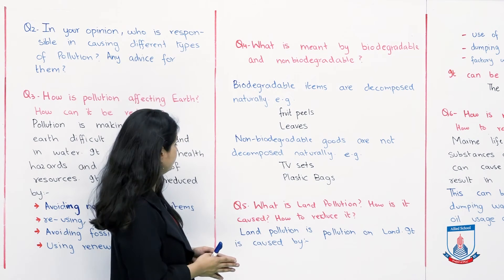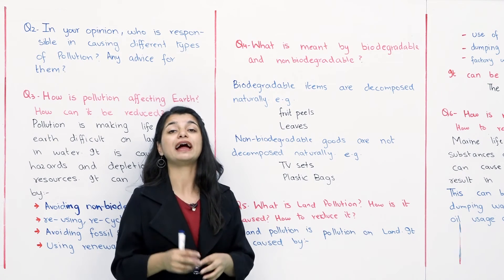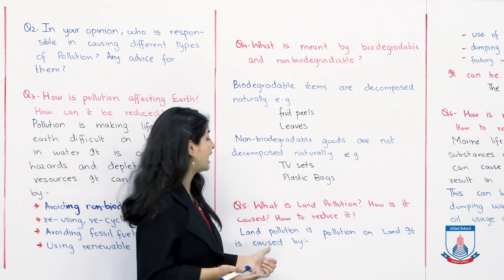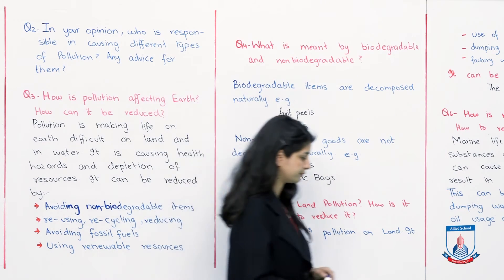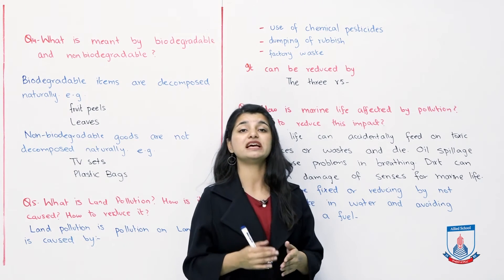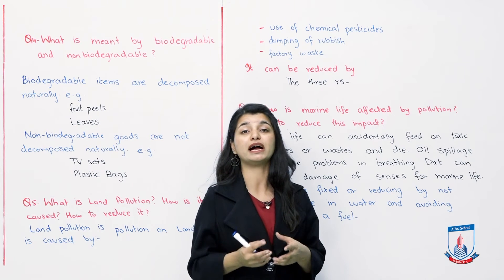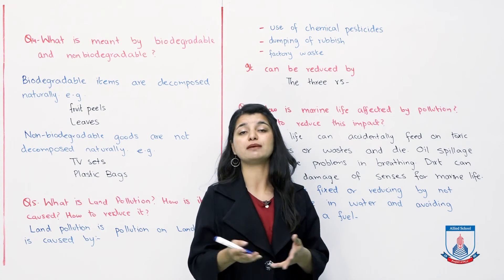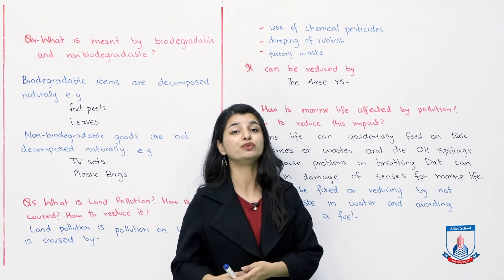After that, we can move to the next question: what is land pollution, how is it caused, and how to reduce it? Land pollution is pollution on the land — there is different pollution in the air and water, and land pollution is specific to the land. It is caused by use of chemical pesticides, dumping of rubbish, and factory waste. Chemical pesticides and fertilizers used in fields and crops eventually make the soil unfit. When you dump garbage it will definitely pollute the land. Waste from factories also pollutes the land. These are all its causes.